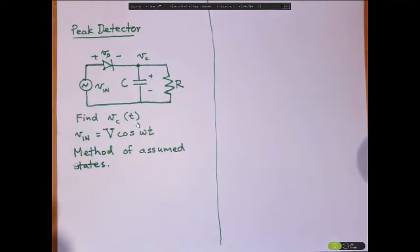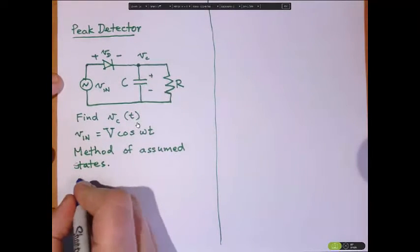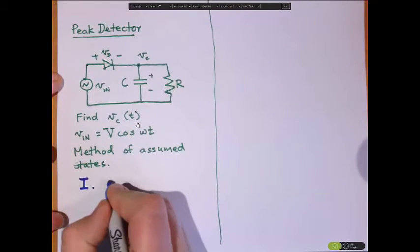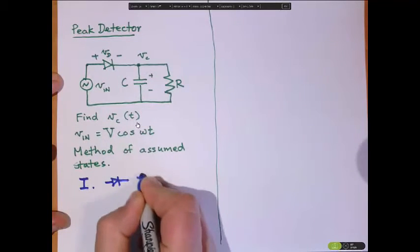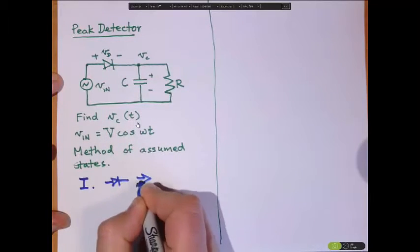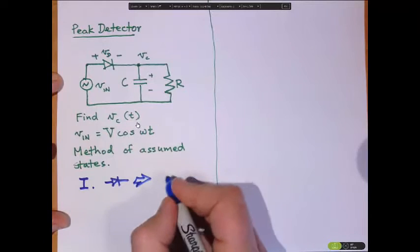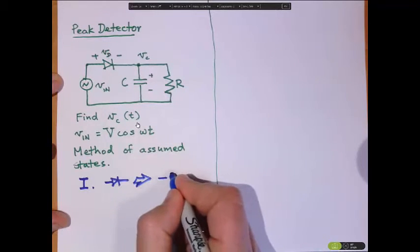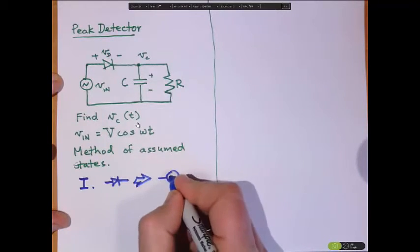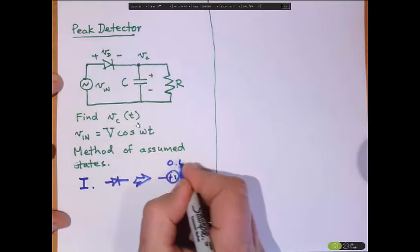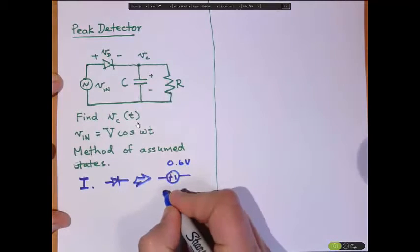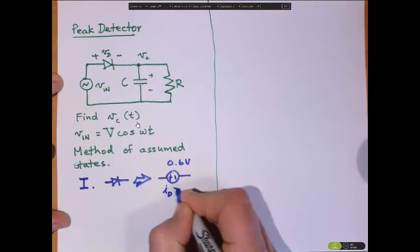So for state one of the diode, we're going to use an ideal diode model. There's another thing you have to remember that the ideal diode model - this is the diode. The ideal diode model is that this is going to be just a voltage supply with a voltage drop of 0.6 volts when the current through it is greater than zero.